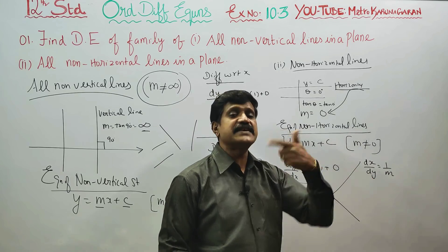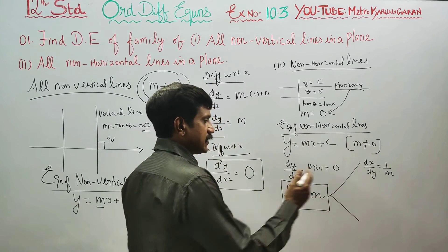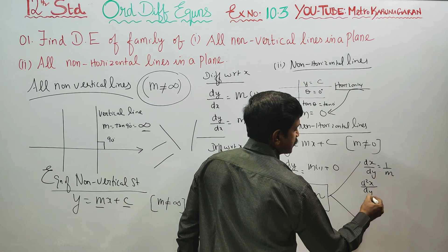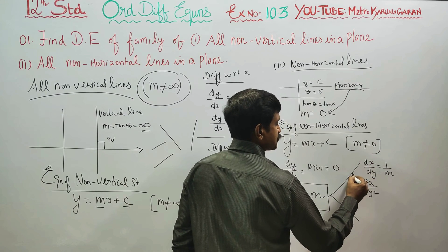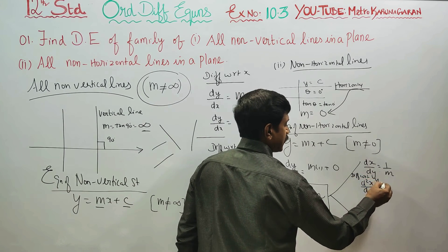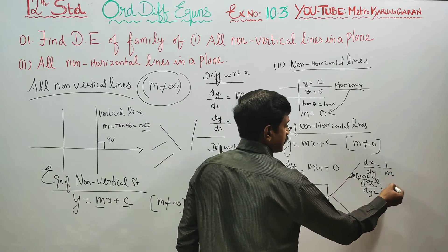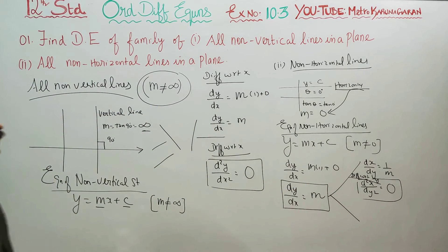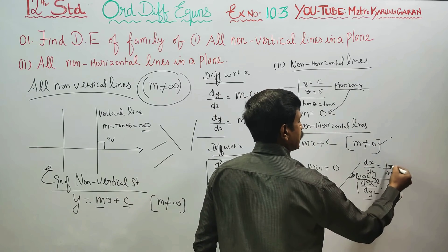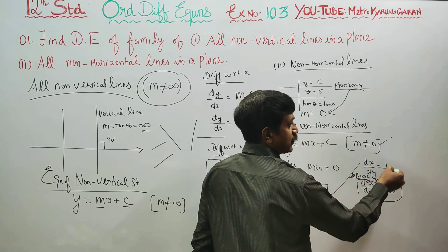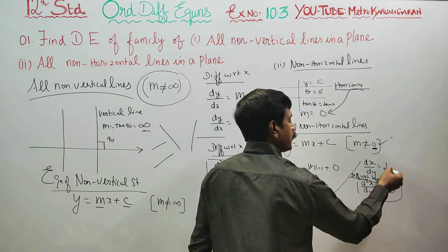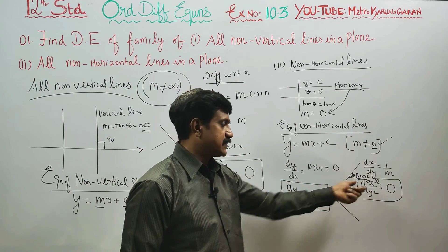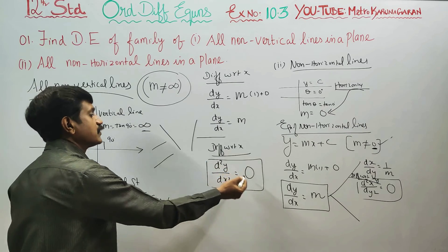That's why we differentiate x with respect to y. Differentiating with respect to y: 1 by m is a constant, so it becomes 0. The answer is d²x/dy² equals 0. Since m is not equal to 0, 1 by m is also a constant and not zero. Differentiating again gives d²x/dy² equals 0. This is the book answer.